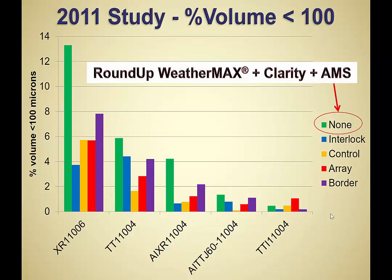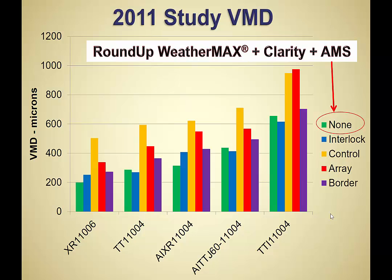The accompanying VMD data showed that when using a TTI nozzle with Control or Border adjuvant, VMD reached around 900 microns. So while we're reducing fines and drift risk, the overall droplet size is very large. Be aware of what product you're applying and what the target looks like — you want to reduce fine droplets and lower drift risk, but you also need to make sure you're making an effective application.